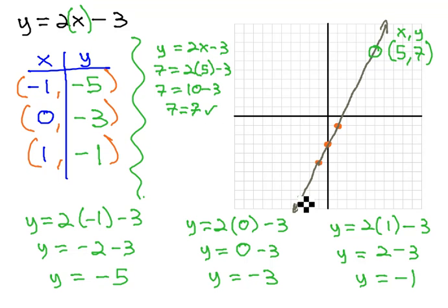No matter what point we pick on this line, decimal, whole number, fraction, any point on that line will give us a combination of numbers that makes this equation a true equation. This is what it means to graph an equation, draw a picture of all the combinations that work.